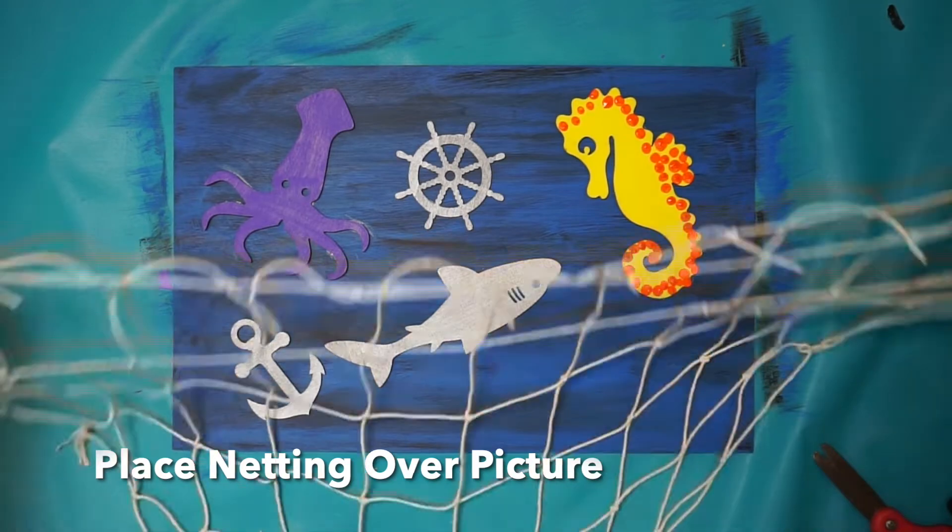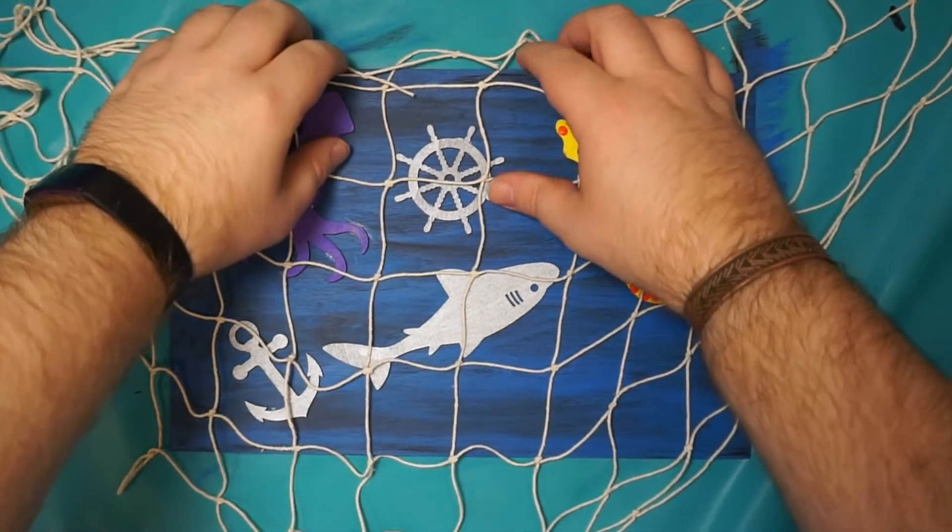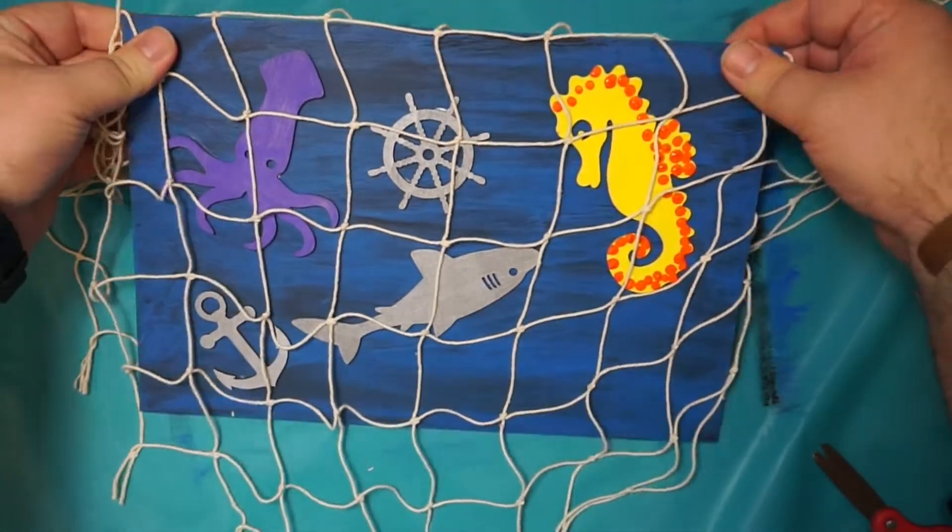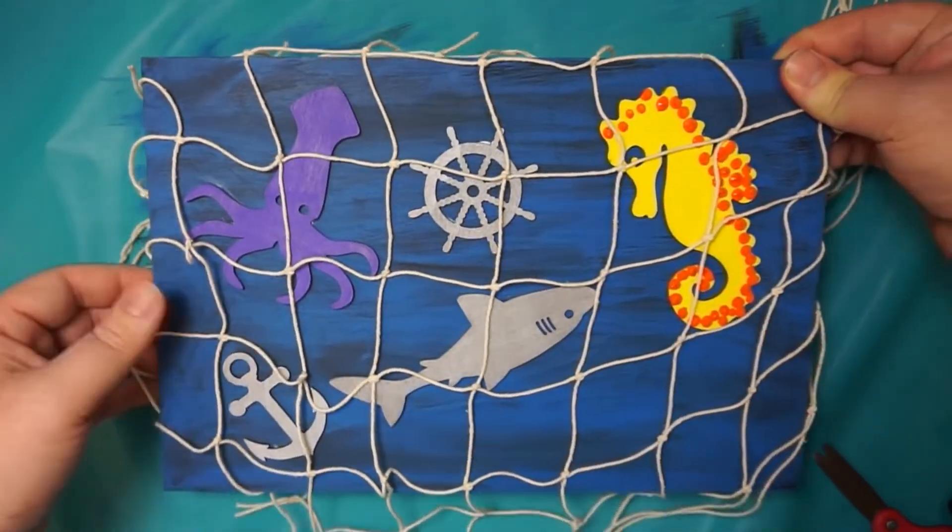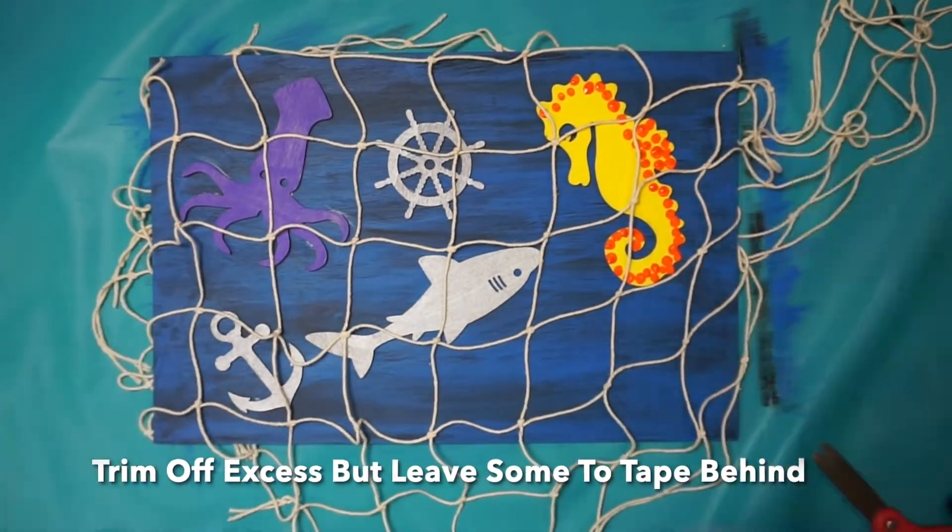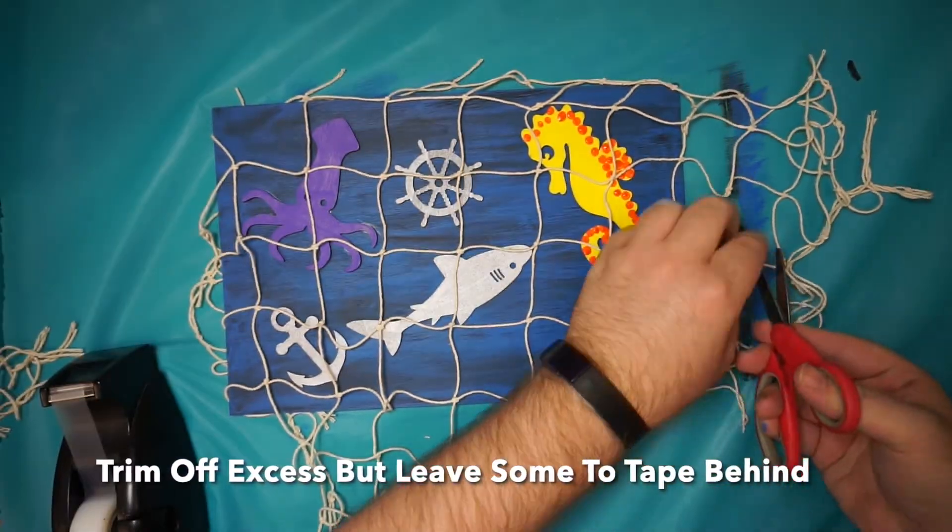Once they're dry, it's time to get our netting. Place it over and situate it the way you want it over your picture. You can take as long as you want, and make sure to cut off some excess so you don't have too much to put down behind the picture.